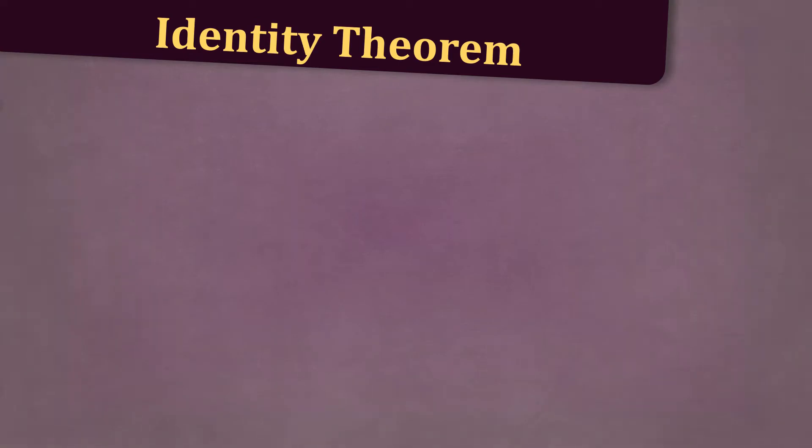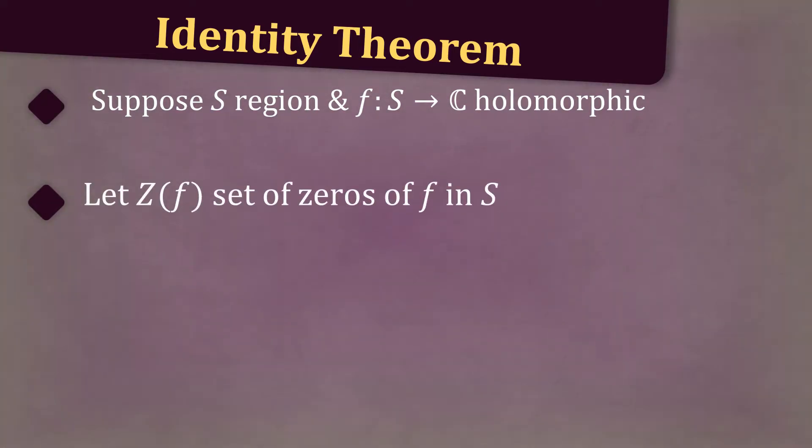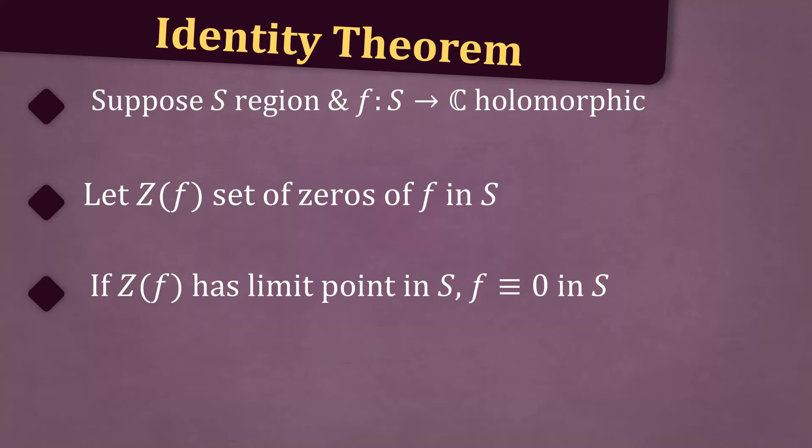Next, let's state the identity theorem. Suppose s is a region and f from s to the complex numbers is holomorphic. Let z of f be the set of zeros of f in s. If z of f has a limit point in s, then f is identically equal to zero in s.